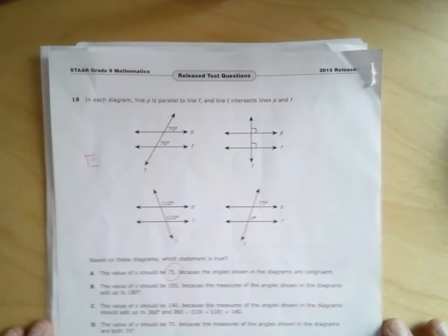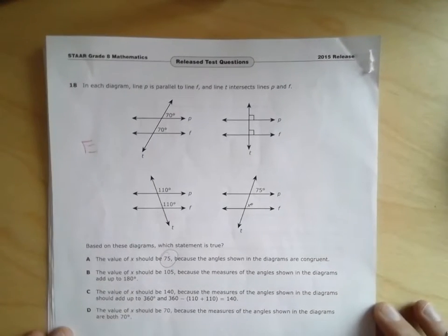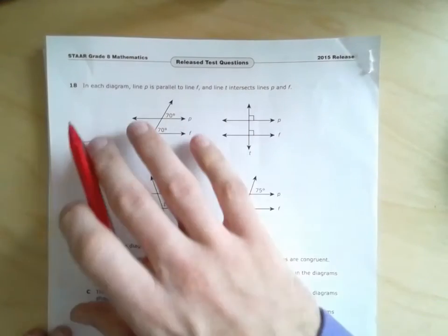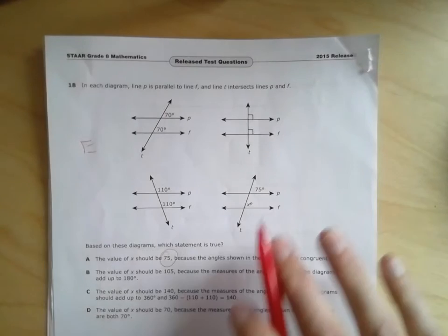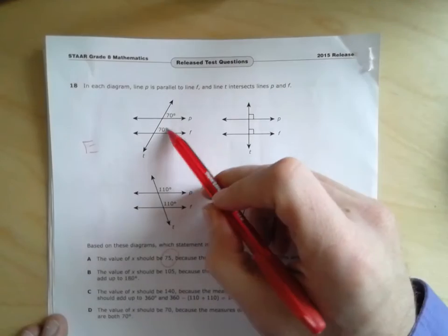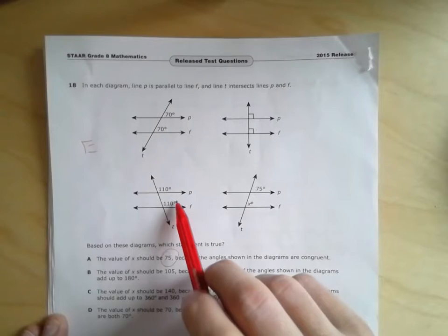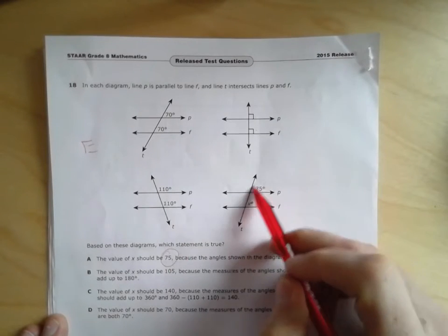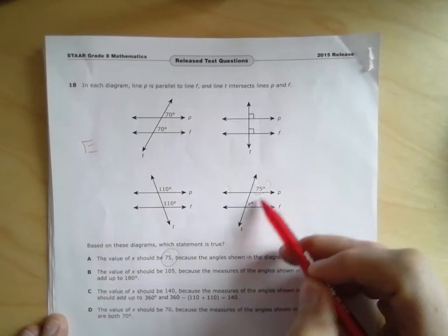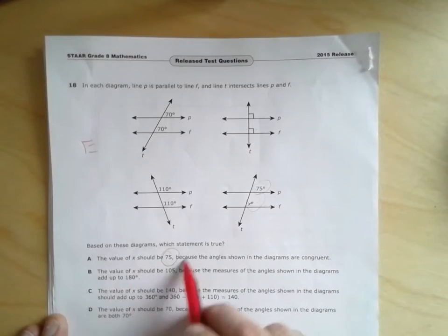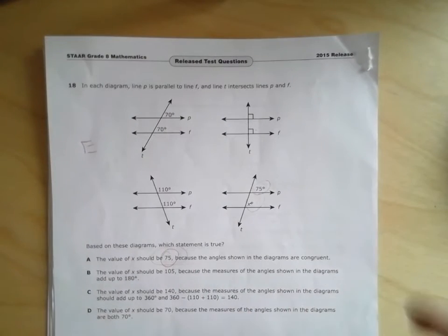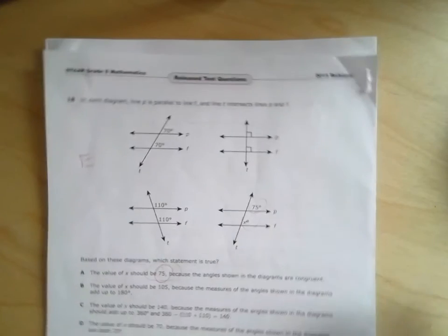I consider this one an easy problem, because if you read the problem, and take time to read each problem before you decide, and look at the pattern, 70-70, 90-90, 110-110. Again, it stands to reason that this would be 75-75, so x is 75. So it doesn't take much inspection to get that one correct.